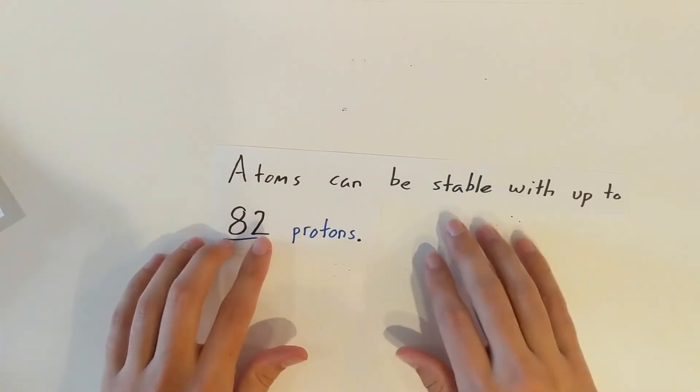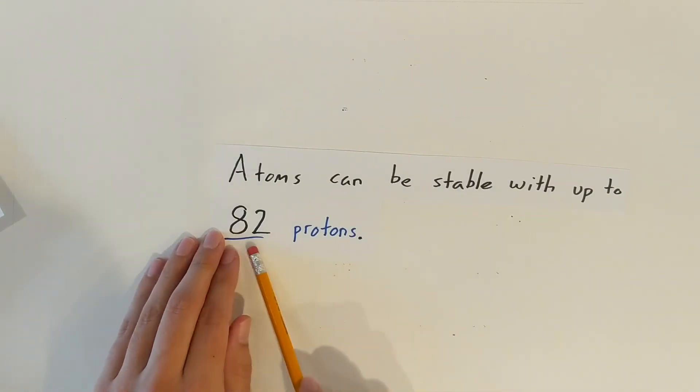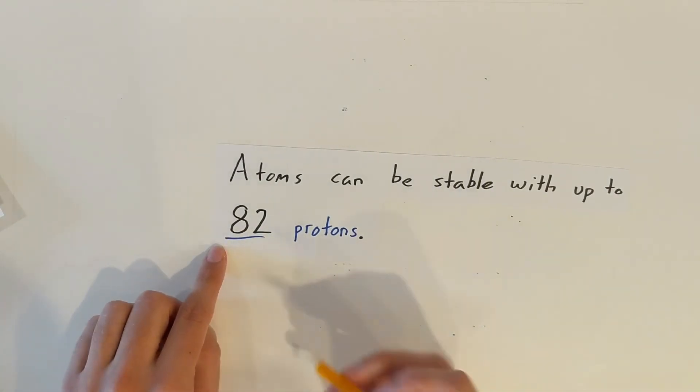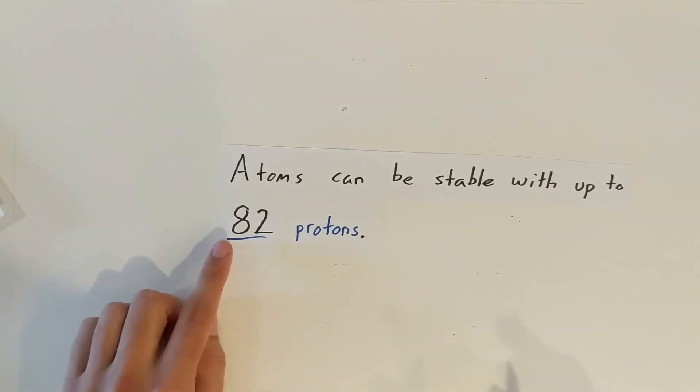So the last thing we're going to cover in this note is going to be atoms can be stable with up to 82 protons. 82 is kind of like that magic number. And 82 protons, that would be the element lead. Any other, I should say, any more protons than that...